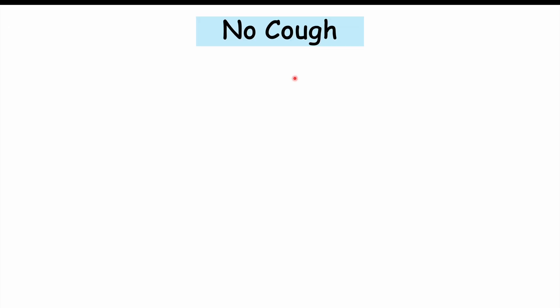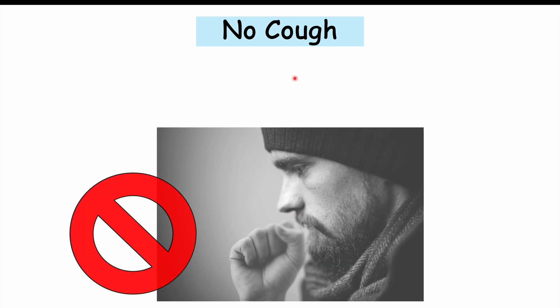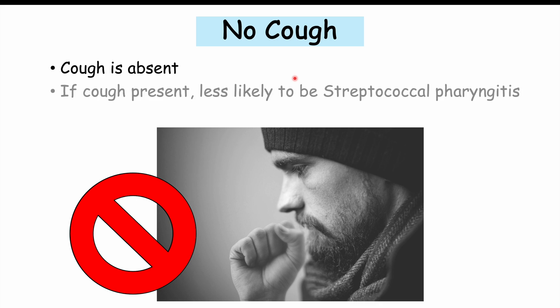The first symptom that helps distinguish strep throat from other upper respiratory tract infections is the absence of cough. In strep throat, cough is absent. If a cough is present, it's less likely to be streptococcal pharyngitis, though in some cases a cough can occur — most of the time there will be no cough at all.